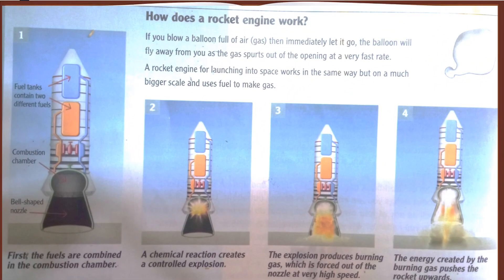In our previous lesson we read about how a rocket engine works. We have two fuel tanks that are combined in the combustion chamber. When they are combined, a chemical reaction creates a controlled explosion. This explosion produces burning gas, which is forced out of the nozzle at high speed. The energy created by the burning gas pushes the rocket upwards.